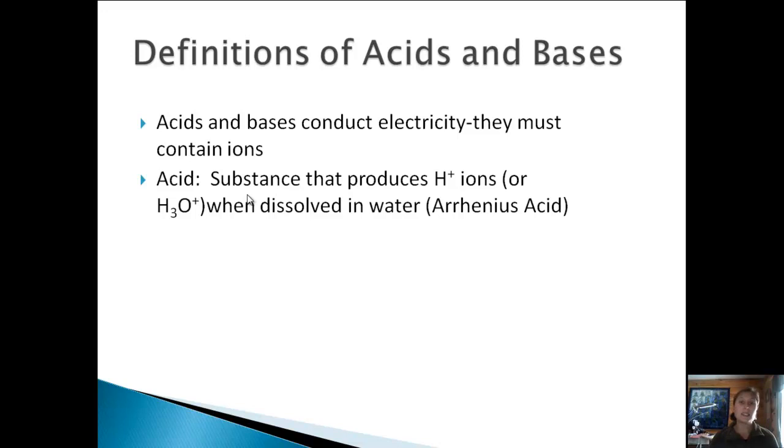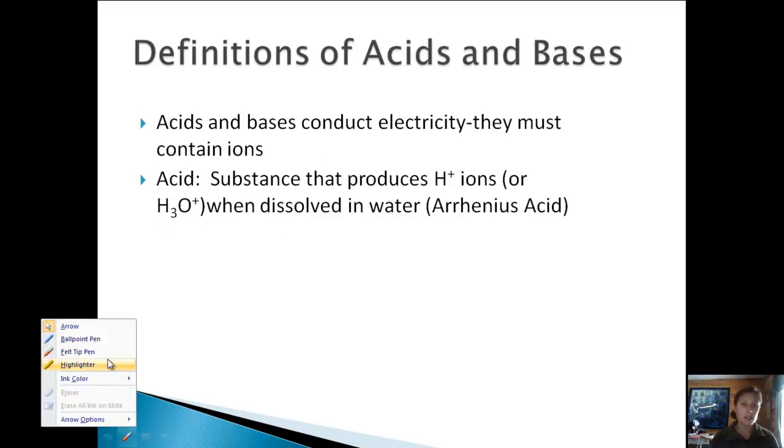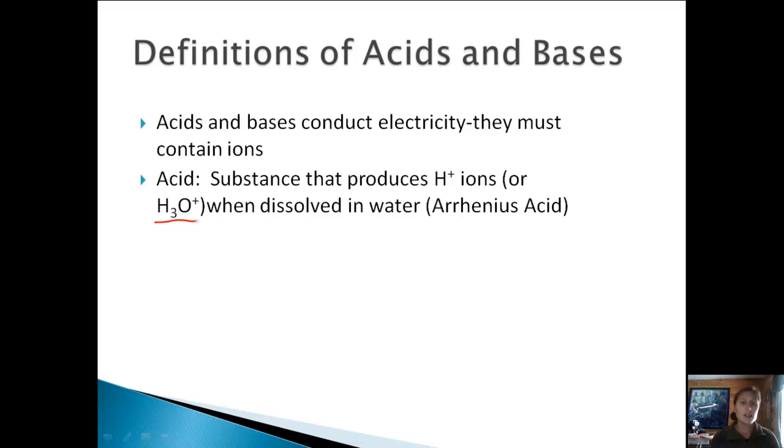So an acid is specifically a substance that produces H+ ions or what are called hydronium ions, H3O+. When they are dissociated and dissolved in water, they will produce an H+ ion. There are lots of different definitions of acids and bases. This definition is called an Arrhenius acid. Later on we'll get more into pH and we'll talk about the other types of acids including Lewis and Bronsted-Lowry.